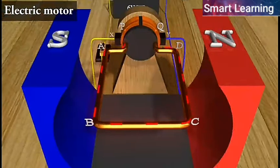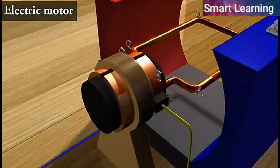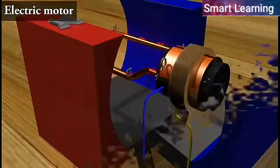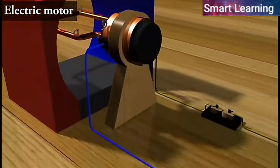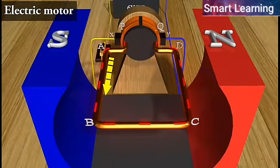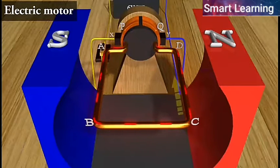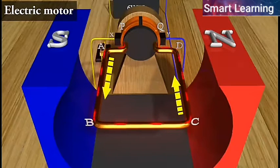Current in the coil ABCD enters from the source battery through conducting brush X and flows back to the battery through brush Y. Notice that the current in the arm AB of the coil flows from A to B. In arm CD, it flows from C to D, that is opposite to the direction of current through arm AB.